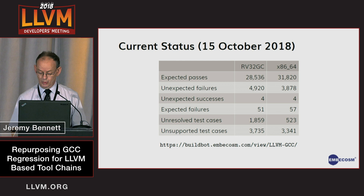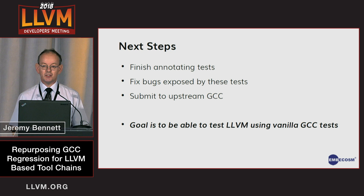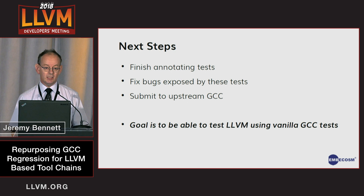This is work in progress. There are about 100,000 C tests and about 50,000 C++ tests in a typical modern GCC run, so we have a way to go. But the goal is to finish annotating tests, to fix any bugs in the compilers we expose by those tests, and then to submit to upstream GCC. The GCC community is amenable to patches that are about making the GCC tests work with other compilers — not just LLVM, but in fact any other compiler.